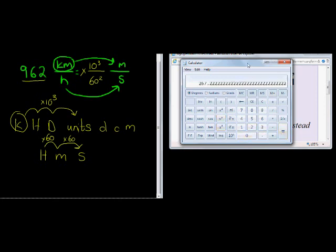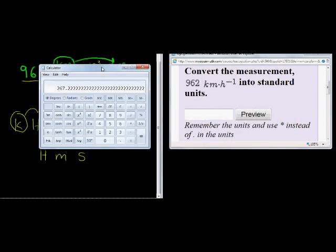In other words, our answer should be, and we're going to round to two decimal places, 267.22, and here we're going to put meters per second to the power of negative 1.